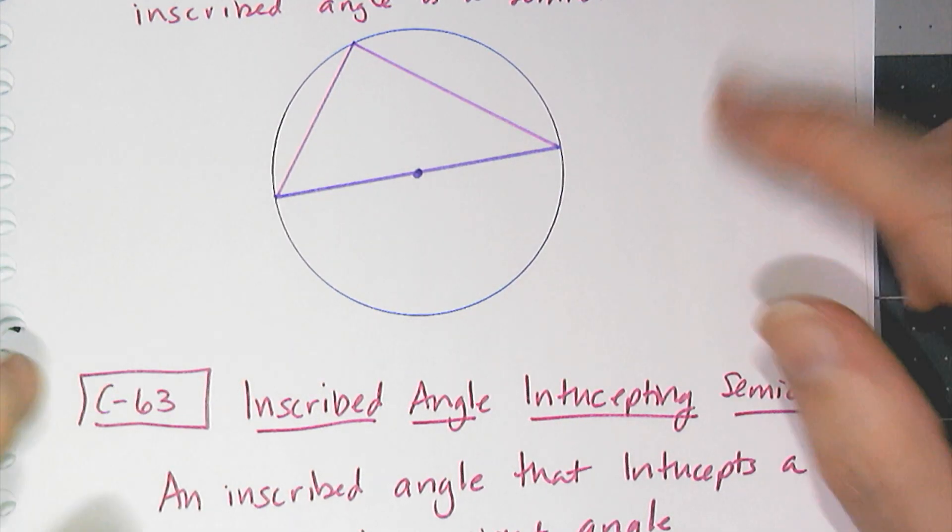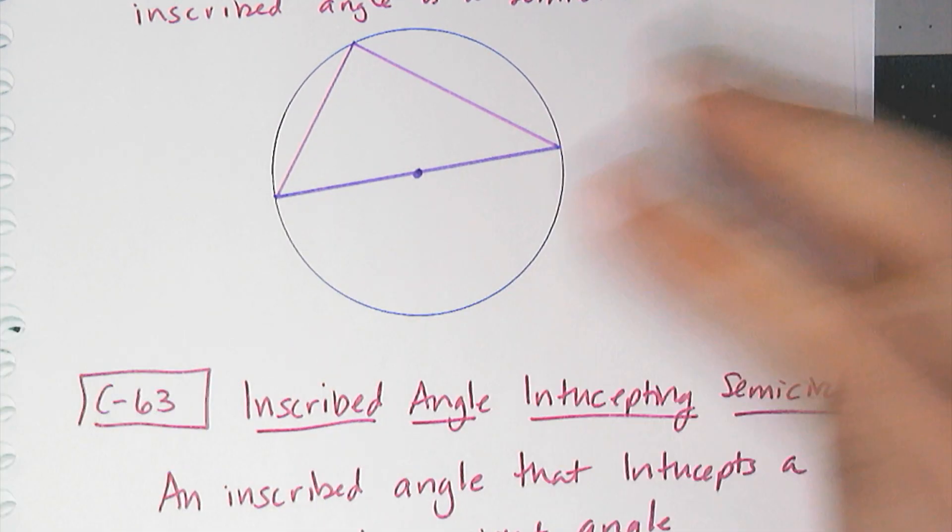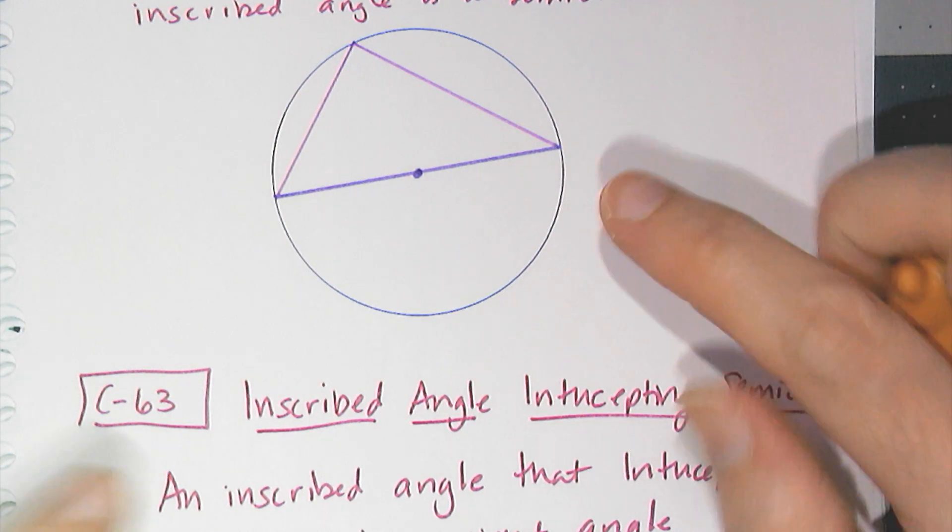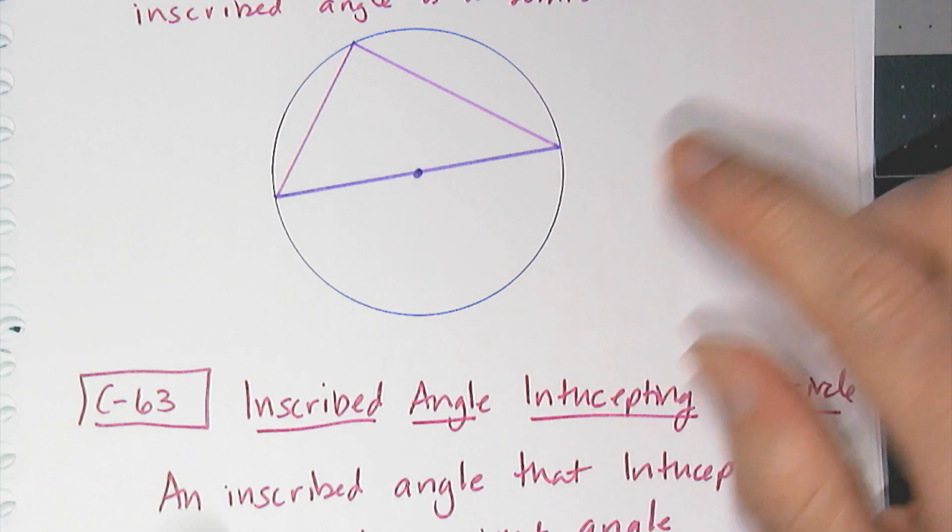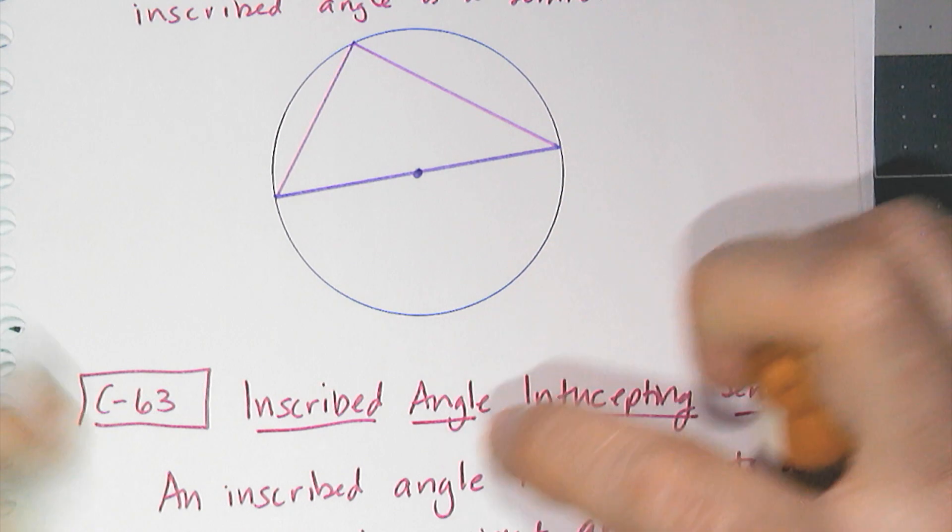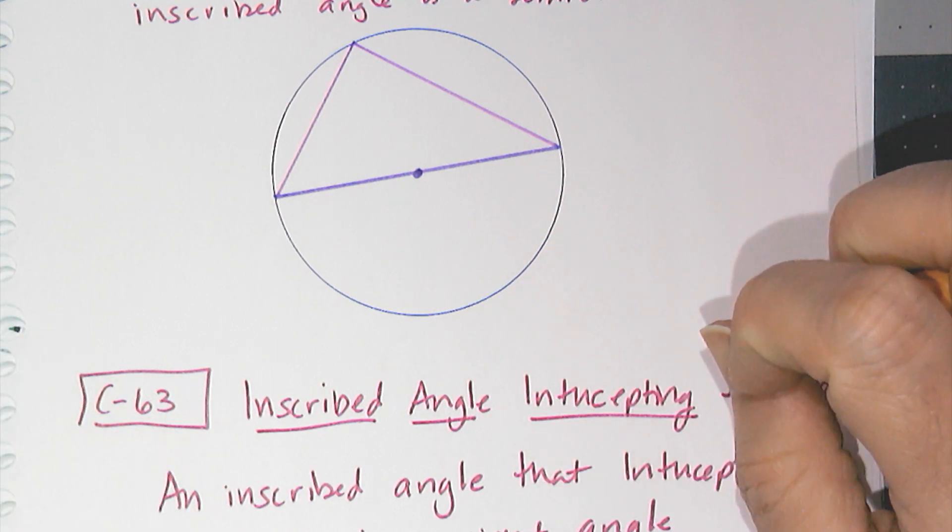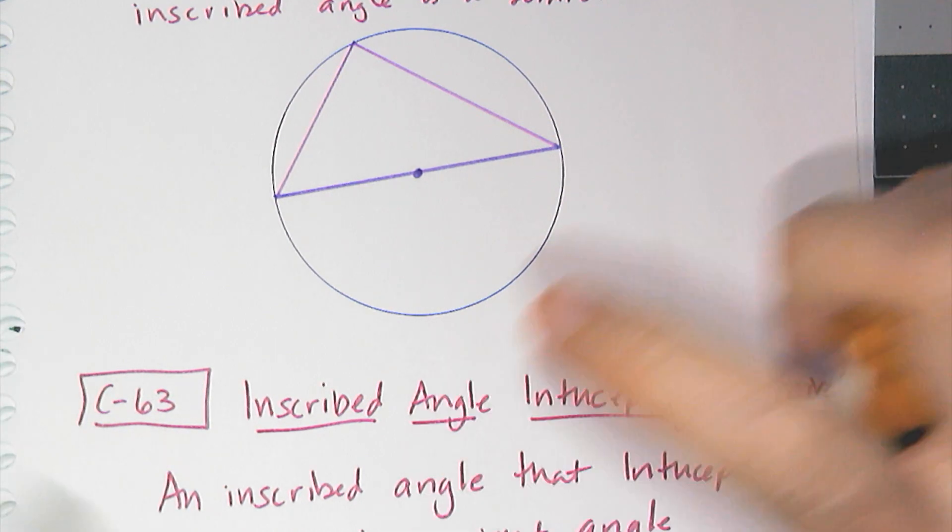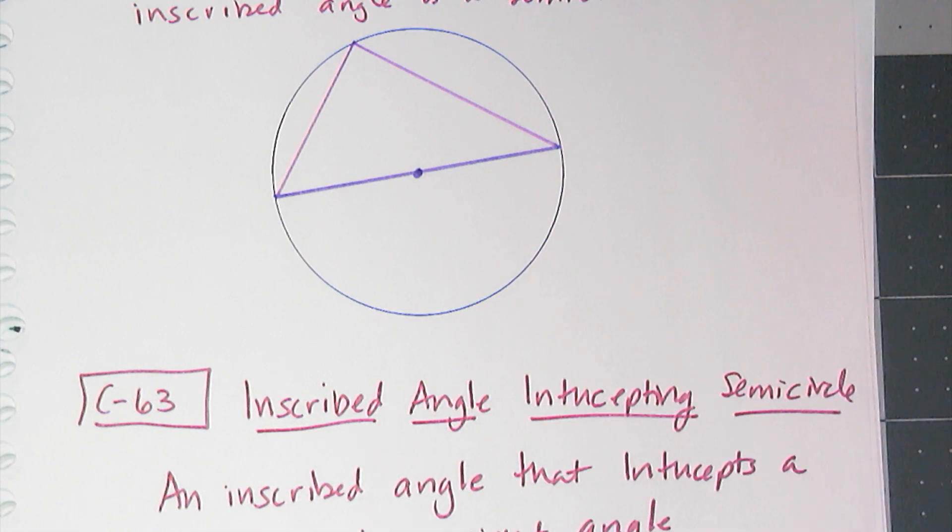Now the reason why I personally like this conjecture is because it helped me remember the inscribed angle conjecture. There are a lot more circle conjectures to come. Some of them are half, some of them are double, some of them are sums, some of them are differences, and it gets easy to get confused as to which conjecture says what.